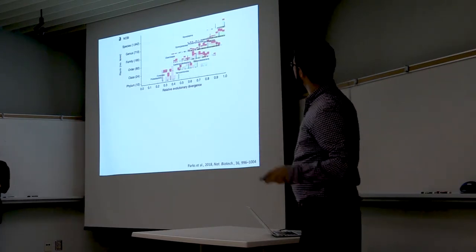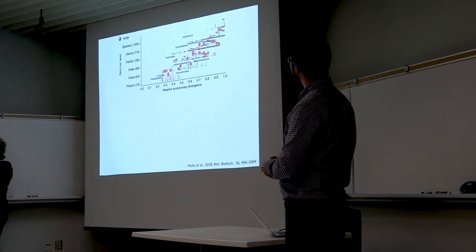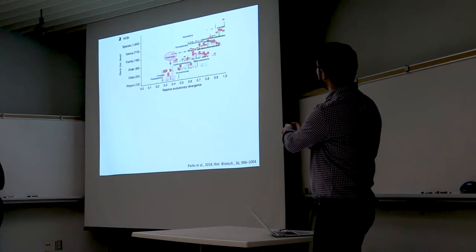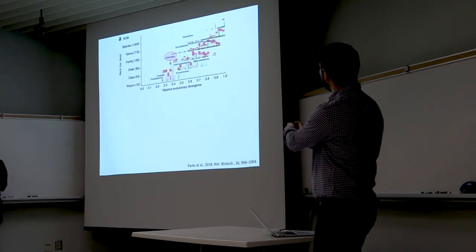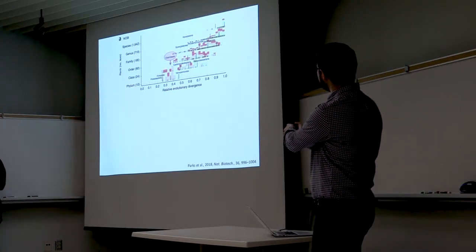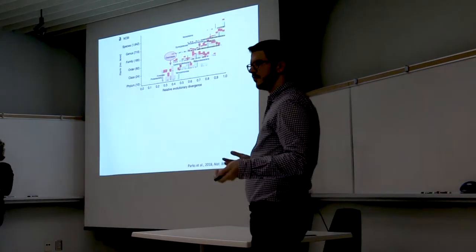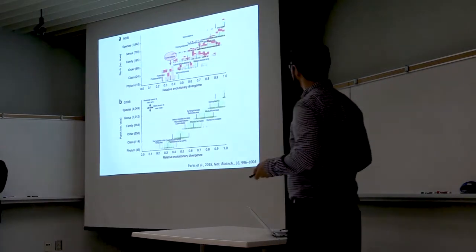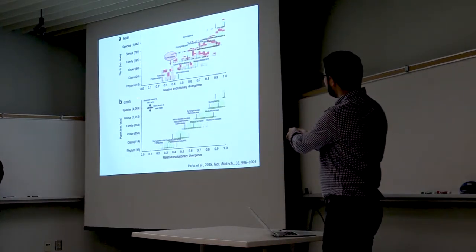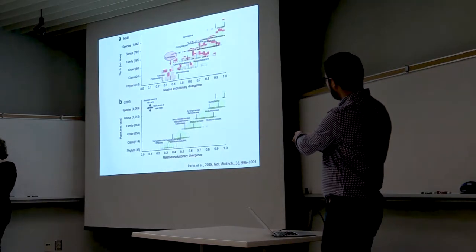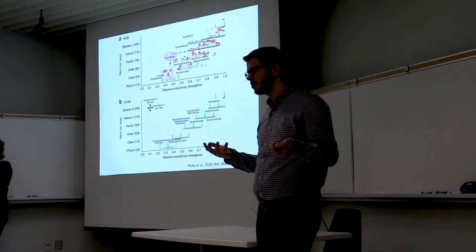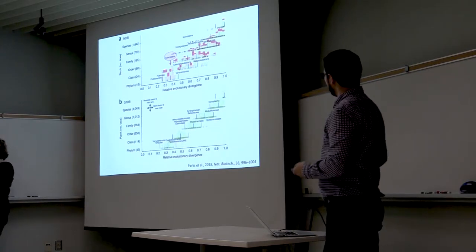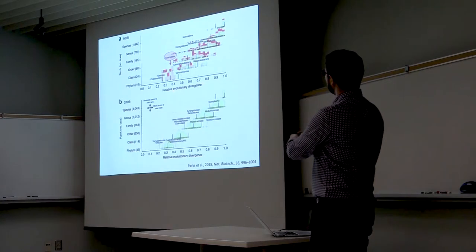There is a general trend where evolutionary divergence corresponds to an increase in taxonomic rank, but there are definitely mistakes. For example, Clostridiales is considered a family, but based on the levels of divergence seen in the data, it should probably be moved to the order level. That is precisely what Parks et al. did in their Genome Taxonomy Database (GTDB) — reassigning bacterial taxa to new locations based on the levels of divergence seen in their genomes, resulting in a much more consistent pattern compared to NCBI.